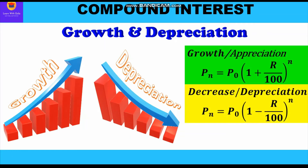Whenever there is growth or appreciation, the population after n years is equal to initial population in bracket (1 + r/100) whole raised to power n. Whenever there is decrease or depreciation, we use the formula: population after n years equals initial population in bracket (1 - r/100) whole raised to power n. Always remember: growth uses the plus sign and decrease uses the minus sign.